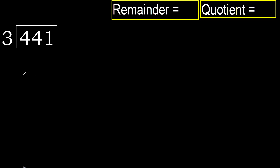441 divided by 3. 4 is not less, therefore with 4. 3 multiplied by which number is nearest 2, 4, but not greater.